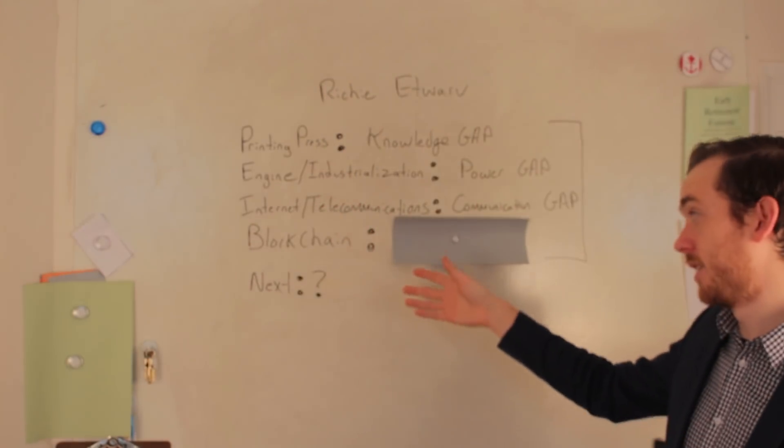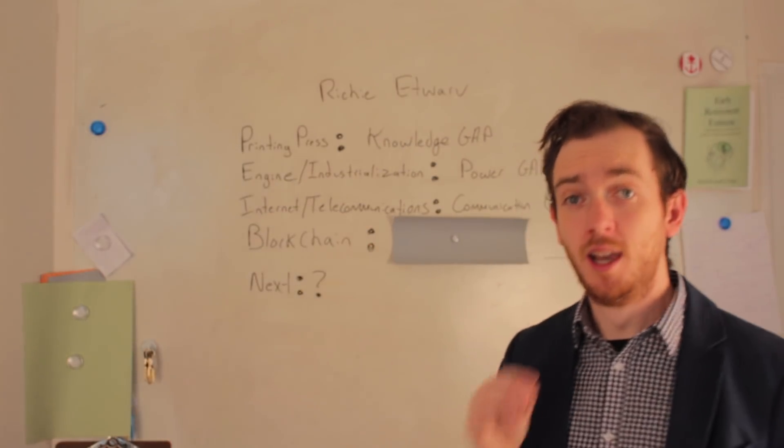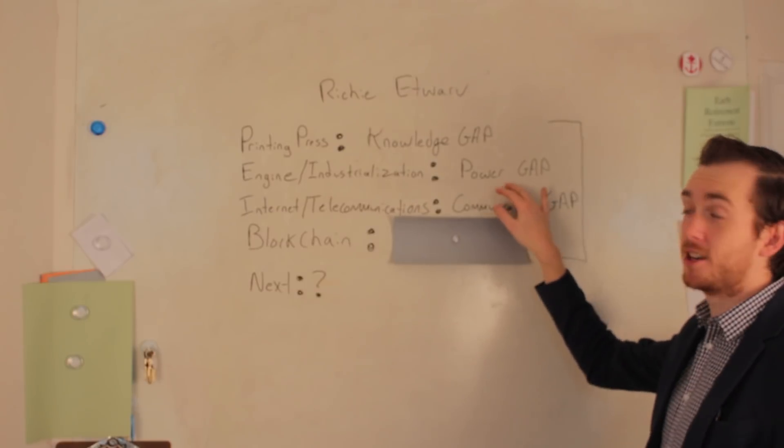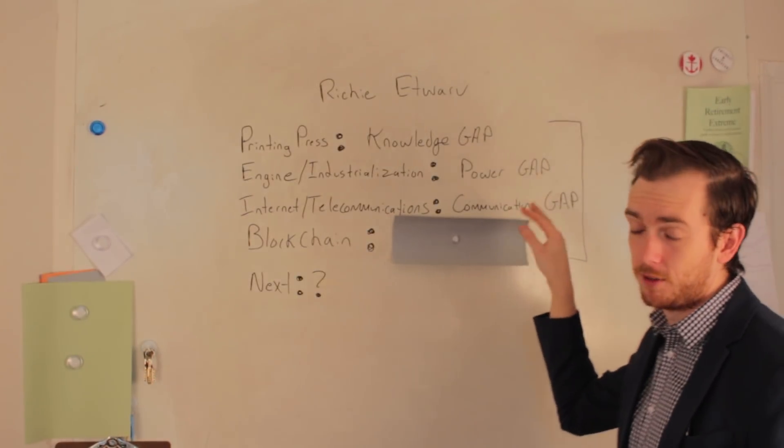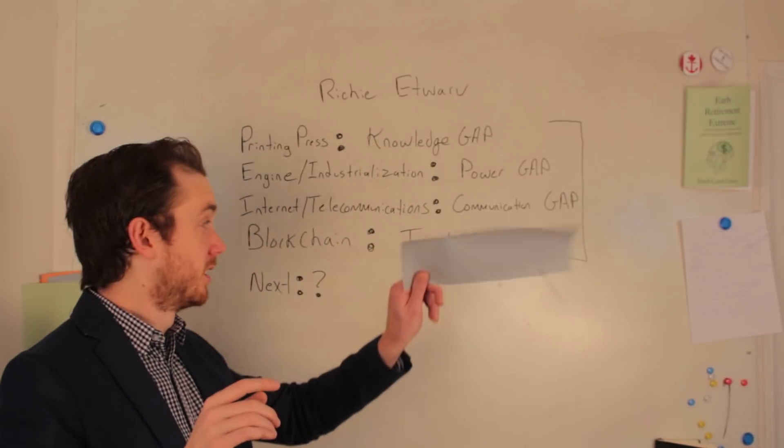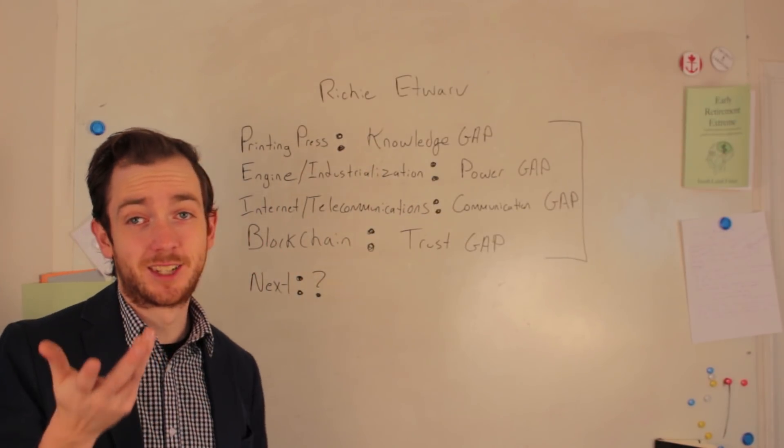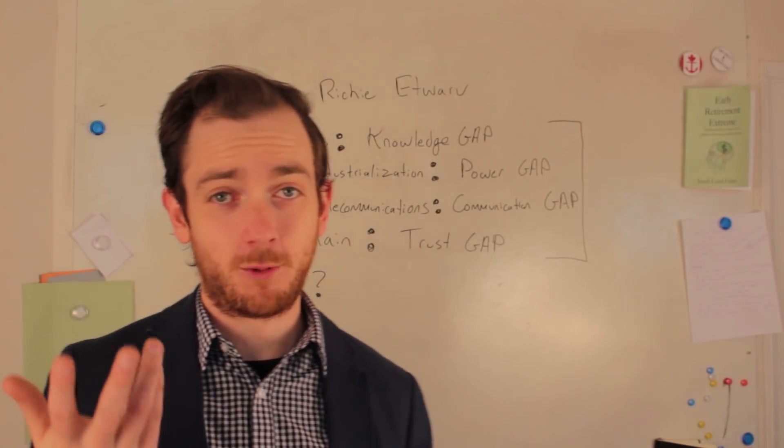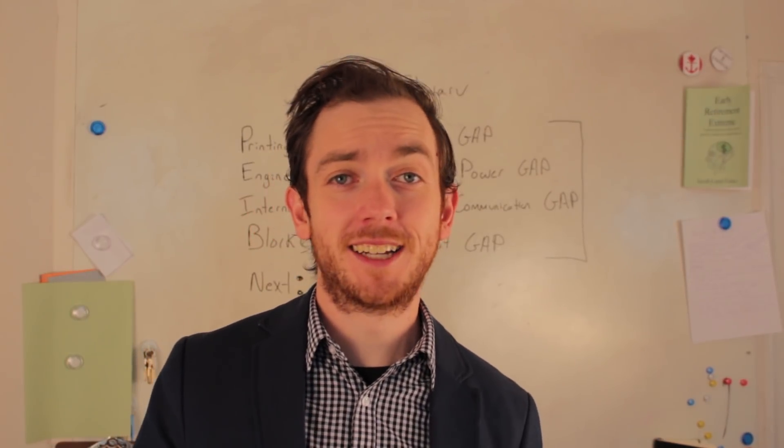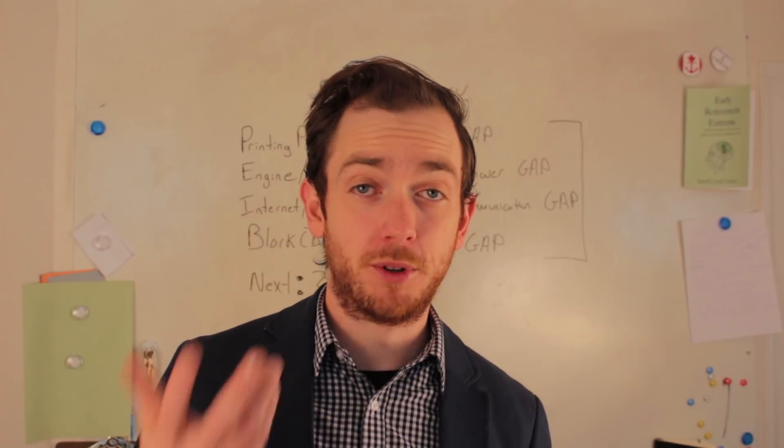And so blockchain is what a lot of people consider to be the next big revolution. And what it's going to revolutionize is, it's not going to revolutionize knowledge, it's not going to revolutionize power, and it's not going to revolutionize communication. It's going to revolutionize the trust gap. And so if you've been paying attention to the cryptocurrency world, or read anything about blockchain, you've probably already realized that it's going to change the way people trust.